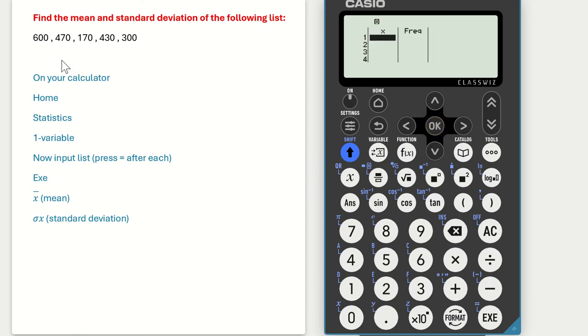The data that I'm going to find the mean and standard deviation for is listed here: 600, 470, 170, 430, 300. So we now need to input our data.